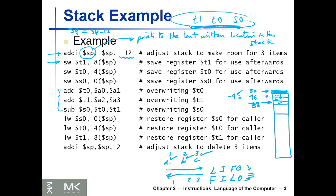We store T1 at SP+8, which gives us location 46 — the first new location after the old stack pointer value. Then we store T0 at SP+4, and we store S0 at SP+0, which is basically location 38. The stack pointer is now pointing to 38.